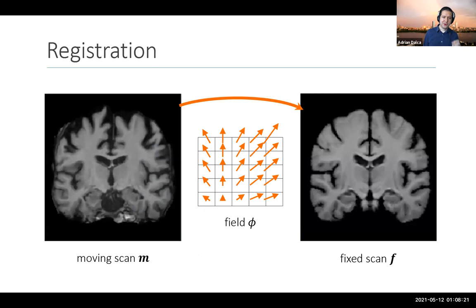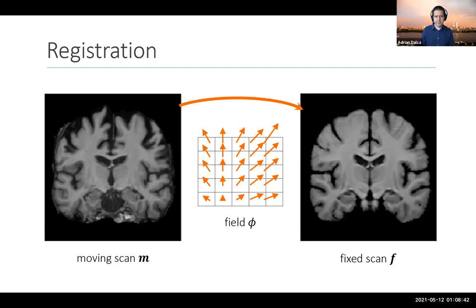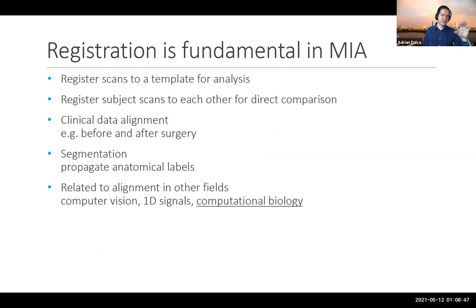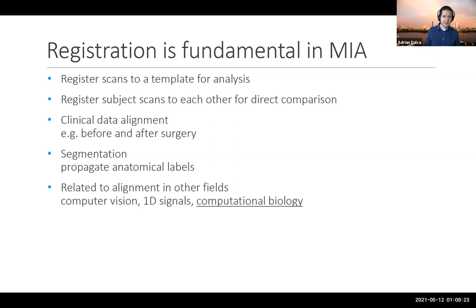When I talk about registration, I mean you're given two images, usually big 3D volumes, and what you want is a deformation field — at every location you have a little arrow that tells you how to move one image so that it matches up with another. We align or register brains to a template, register subjects between each other to compare anatomy, align a subject before and after surgery to see how a tumor has grown, and propagate information from one brain to another.